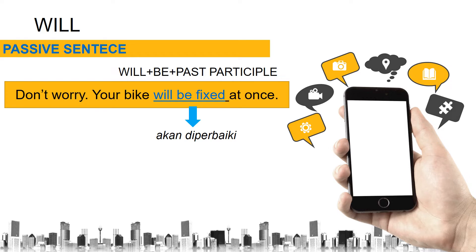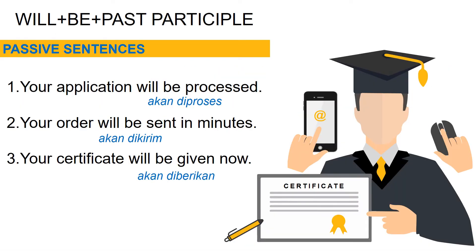If one sentence is not enough, here are more examples of using 'will' in passive sentences. First: 'Your application will be processed' — 'will be processed' means 'akan diproses.' Second: 'Your order will be sent in minutes' — 'will be sent' means 'akan dikirim.' Third: 'Your certificate will be given now' — 'will be given' is also passive. Remember the formulation: will + be + past participle.